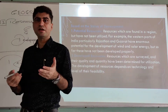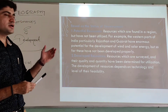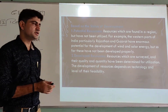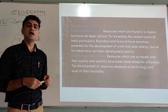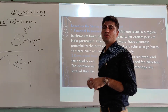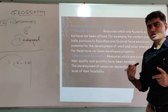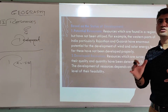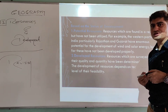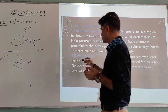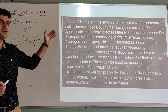Developed resources are those which have been surveyed and are actually being used in the best possible way. Resources whose quality and quantity have been determined for utilization are developed resources. The development of resources depends on technology and level of feasibility. For example, crude oil — we know the availability, quantity, and quality of crude oil, and we have enough technology to utilize it in the best possible way — those are developed resources.